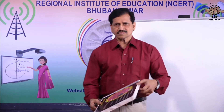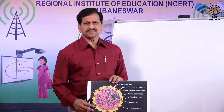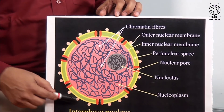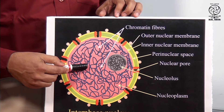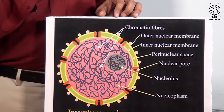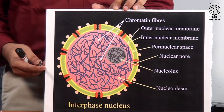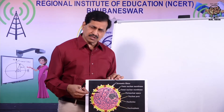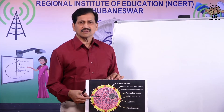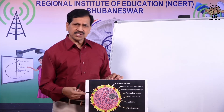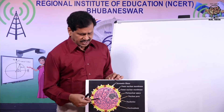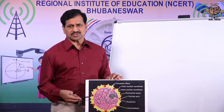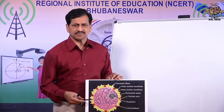As you know, the nucleus has four components: the nuclear membrane, nucleoplasm, nucleolus, and chromatin fibers. In the last class we discussed about the nuclear membranes, nucleoplasm, and nucleolus. Today we will discuss what are these thread-like structures — that is, chromatin — what is a chromosome, what are different types of chromosomes, and what is the structure of chromosomes.